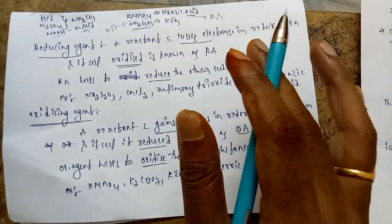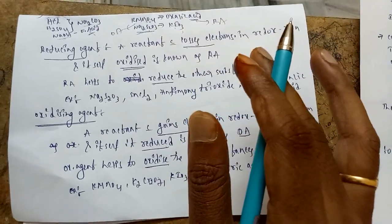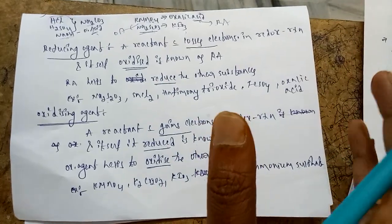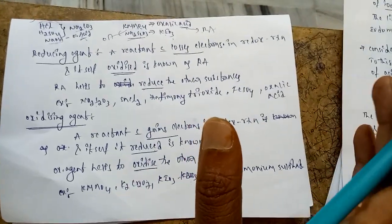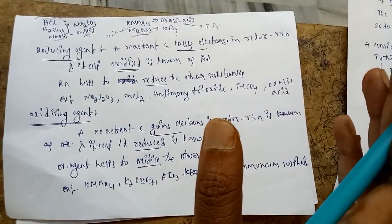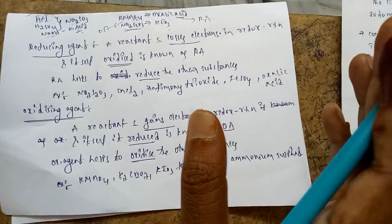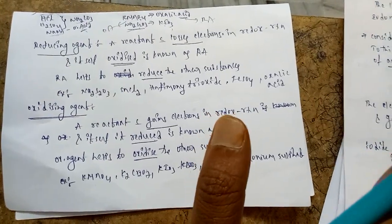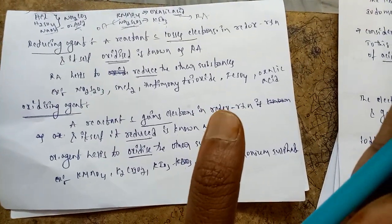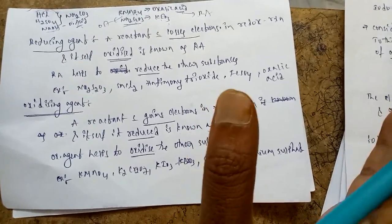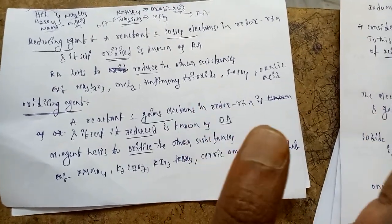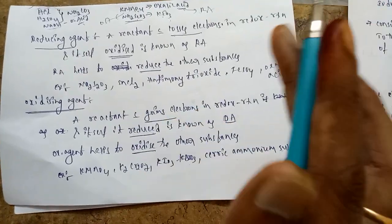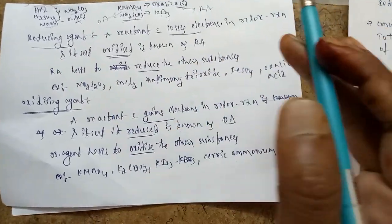Today I am going to discuss about iodimetry and iodometry. Both are redox titrations. Before going to discuss about iodimetry and iodometry, first we should know what is meant by reducing agent and oxidizing agent.